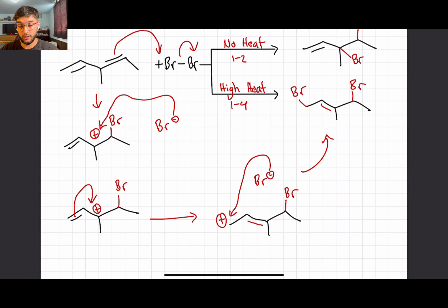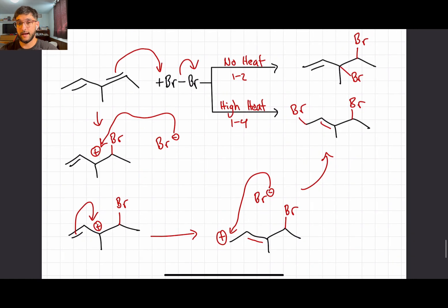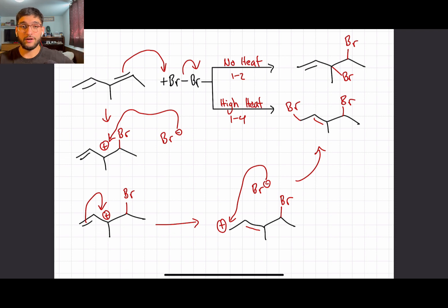This gives us our end product for when heat is present, and it's a 1,4 addition — we added a bromine on carbon one and a bromine on carbon four. To summarize: when there is no heat, we create the fastest product with fewer steps, and after forming the carbocation the bromine attacks immediately for a 1,2 addition. When there is heat, we still form the carbocation first, but then form the more stable product by making the double bond more substituted, followed by bromine attacking for a 1,4 addition. Thanks for watching — please leave any comments or questions below, and let us know what other topics you'd like us to cover.